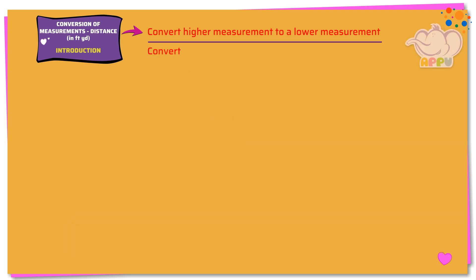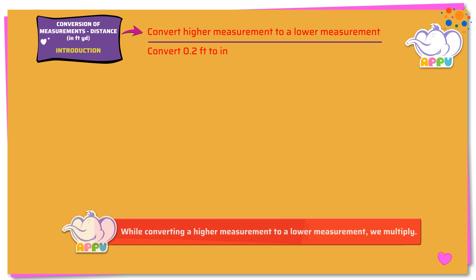Convert 0.2 feet to inches. Here we need to find how much is 0.2 feet in inches. We know that 1 foot equals 12 inches.